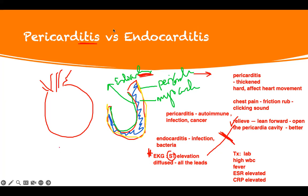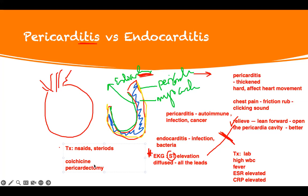Treatment: we give NSAIDs. Sometimes steroids. The good NSAID is colchicine — you already know about it. If there's no colchicine in the answer choices, you pick an NSAID. Colchicine is the treatment of choice, but you can pick an NSAID. If it doesn't resolve, they have to do a pericardectomy — basically, they have to remove the pericardium. This is a last resort.